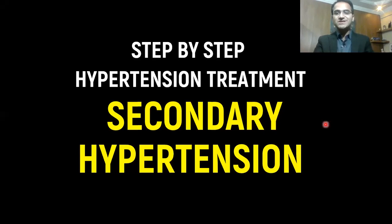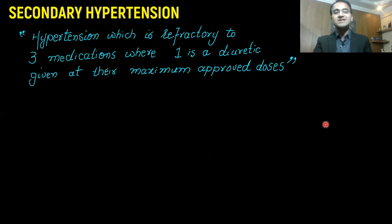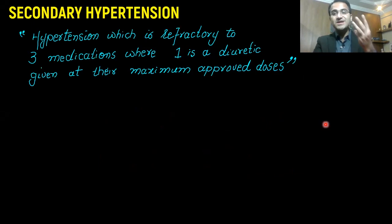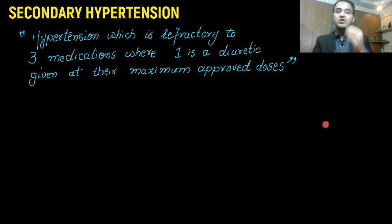In our video series on step-by-step treatment of hypertension, this video covers secondary hypertension. Secondary hypertension is defined as hypertension which is refractory to three medications, where one is a diuretic given at their maximum approved doses. When a patient is on three anti-hypertensive medications and one is a diuretic, but blood pressure is still not under control, that is called secondary hypertension.